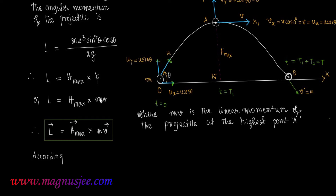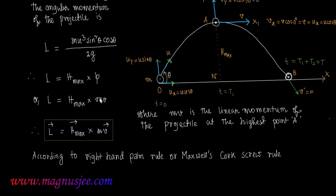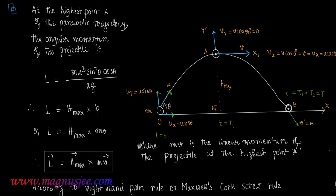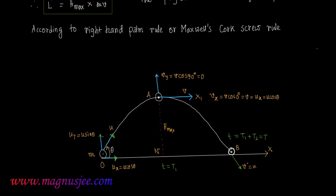According to the right-hand palm rule or Maxwell Corkscrew rule, from the diagram we can see that the angular momentum vector L acts outwards with respect to the vertical parabolic trajectory of the projectile.